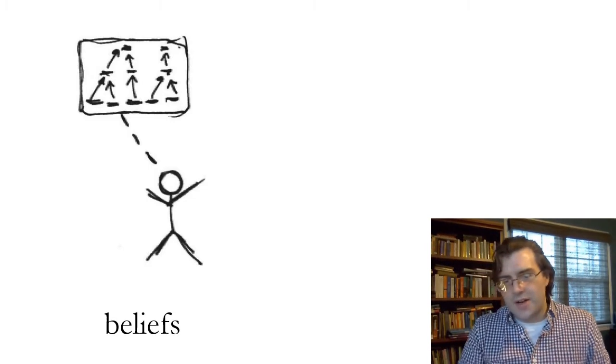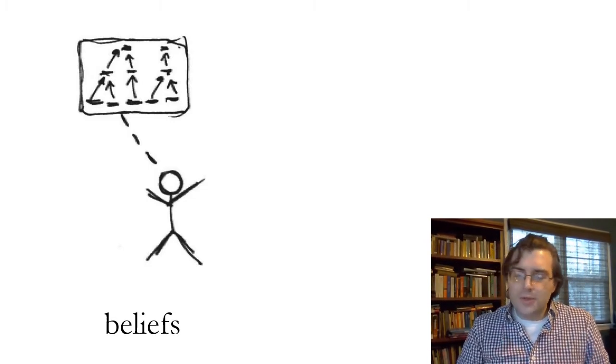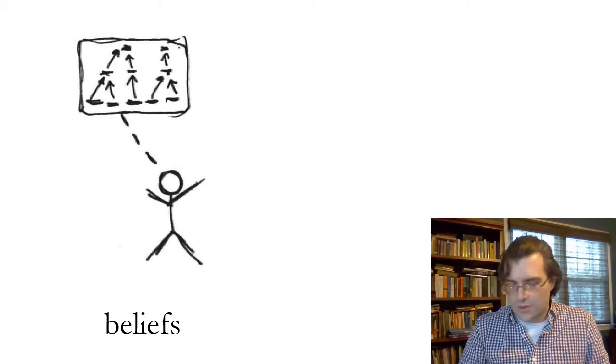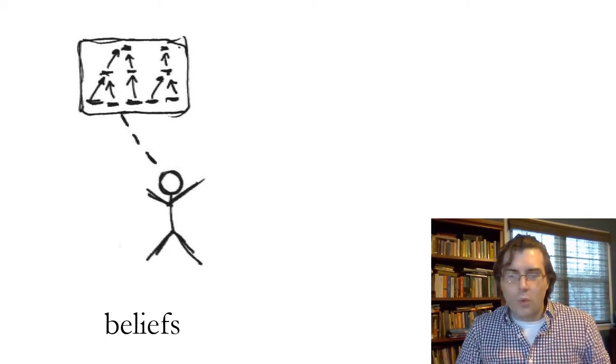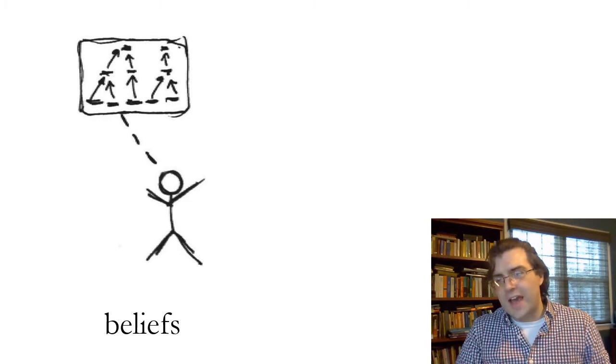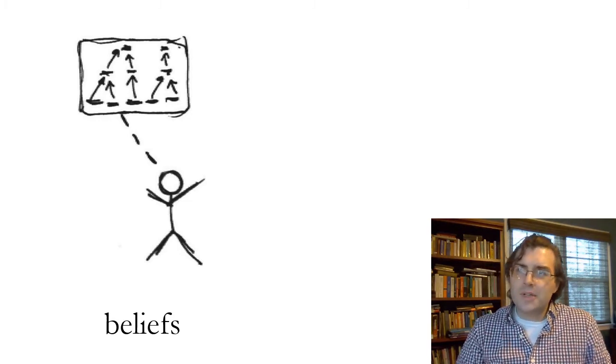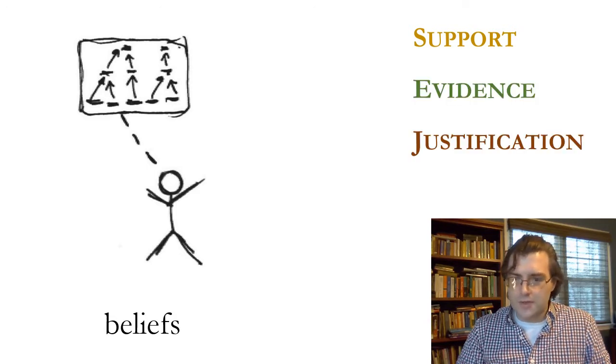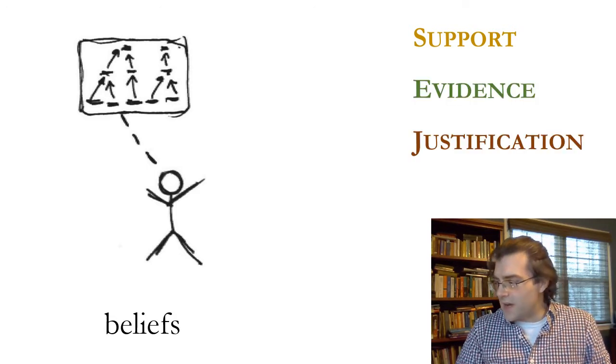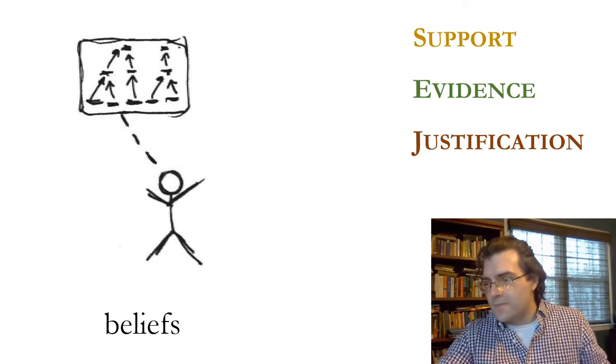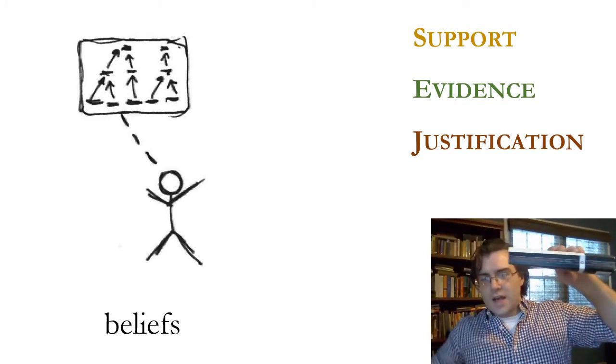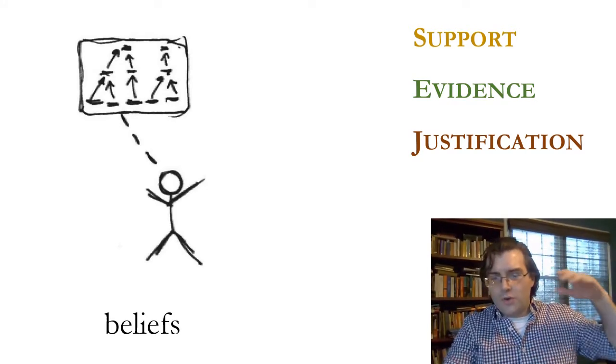Now, another thing to notice here right at the outset is that our beliefs are not completely disconnected from one another. Our beliefs are related to one another in various ways. And one important kind of relation that they have to one another is that some beliefs support others. That is, they provide evidence or justification for others. So, for instance, if I believe that if I lift this object, this book in my hand, and then let go, that it will fall to the ground.